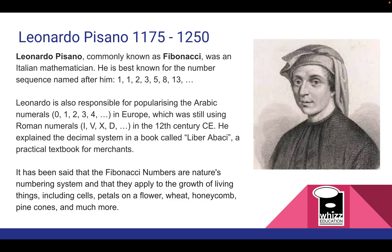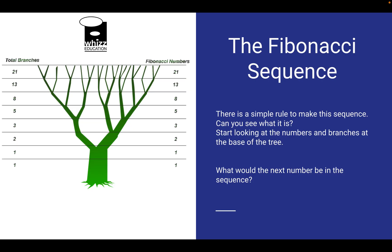Here we have a tree, and you can see as the tree goes from its base upward, the branches spread out as an example of Fibonacci numbers. There is a simple rule — a formula — to work out what the next number is. Can you see what the rule is, and what would be the next number in the sequence?